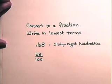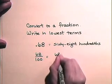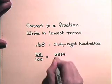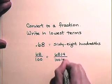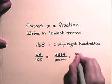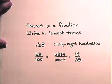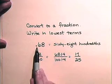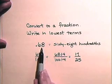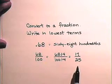Both the top and bottom are divisible by 4, so we will divide the numerator 68 by 4. We will divide the denominator 100 by 4 and we will obtain 17 over 25 in lowest terms. So, point 68, 68 hundredths in lowest terms is 17 over 25.